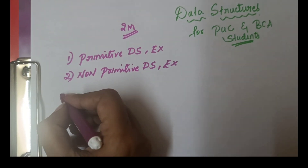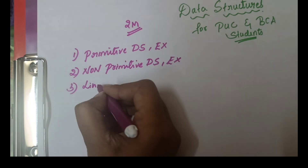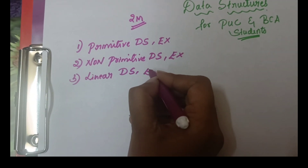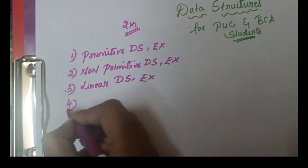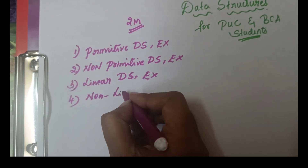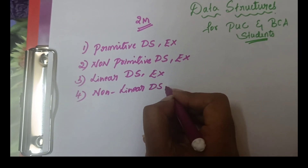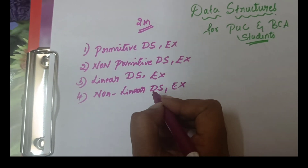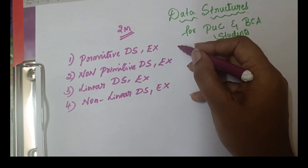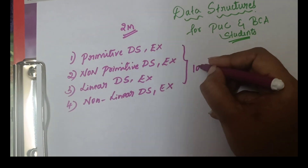The second one is non-primitive data structure. It is derived from primitive data structure, and examples are arrays, lists, and files. Third is linear data structure — linear means it is in sequential order. Examples are stacks, queues, and linked list. Fourth is non-linear data structure, where elements are not arranged sequentially. Examples are graphs and trees.